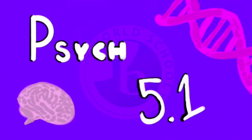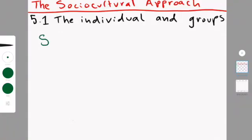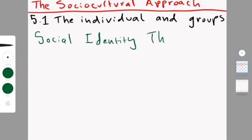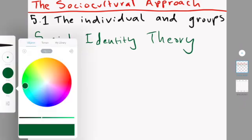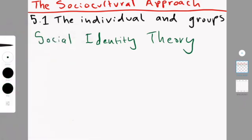Social identity theory refers to the assumption that humans do not have only a personal self but also several social selves that correspond to their in-groups.